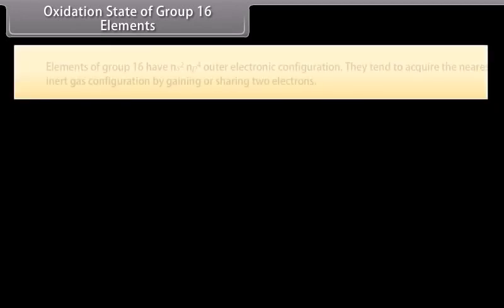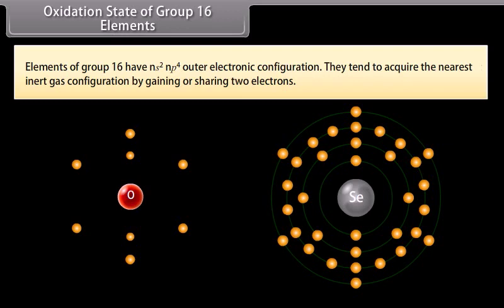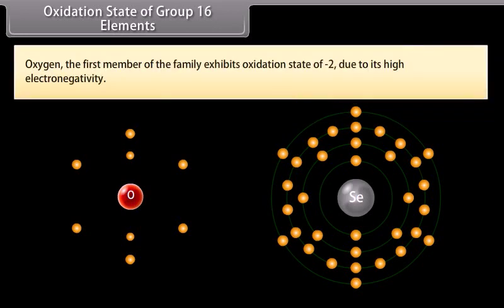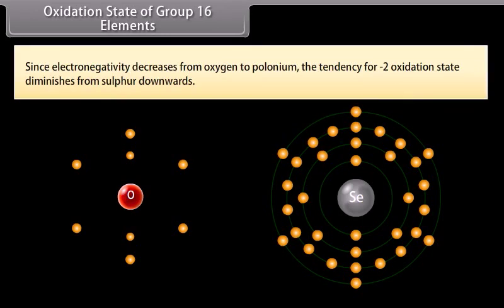Oxidation state of group 16 elements. Elements of group 16 have ns2 np4 outer electronic configuration. They tend to acquire the nearest inert gas configuration by gaining or sharing two electrons. Oxygen, the first member of the family, exhibits oxidation state of -2 due to its high electronegativity.